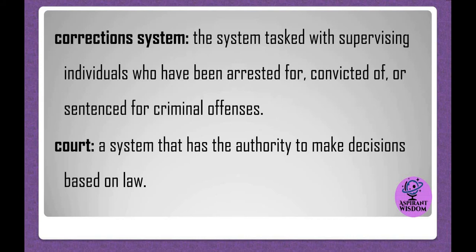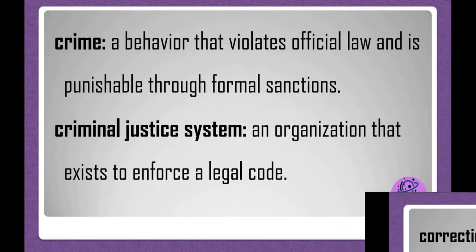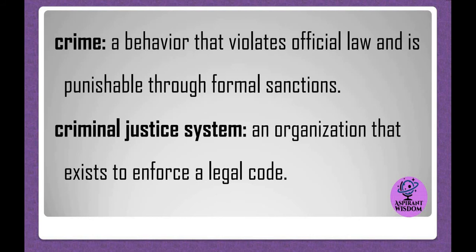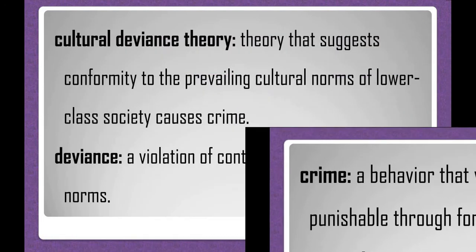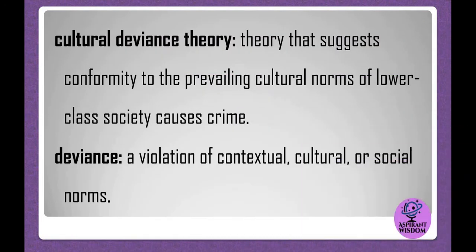Court: a system that has the authority to make decisions based on law. Crime: a behavior that violates official law and is punishable through formal sanctions. Criminal justice system: an organization that exists to enforce a legal code. Cultural deviance theory: a theory that suggests conformity to the prevailing cultural norms of lower-class society causes crime.